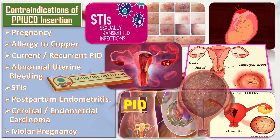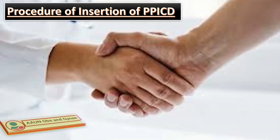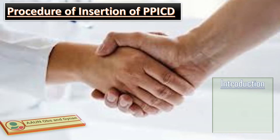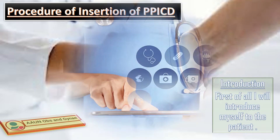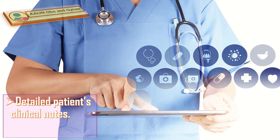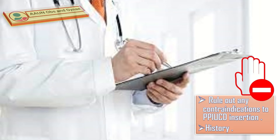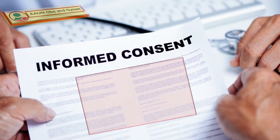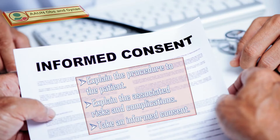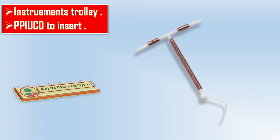The procedure of insertion of PP-IUCD starts with introduction. I will introduce myself to the patient and, after studying the detailed patient clinical notes, congratulate her on the birth of her baby. I will rule out any contraindications by taking medical, gynecological and surgical history, explain the procedure with associated risks and complications, and take informed consent. I will check the instrument trolley and the PP-IUCD with expiry date, seal, and integrity of the seal.